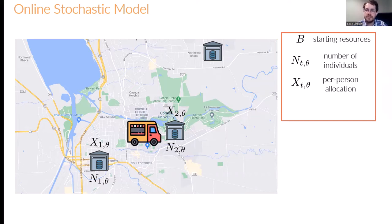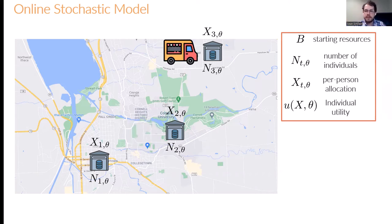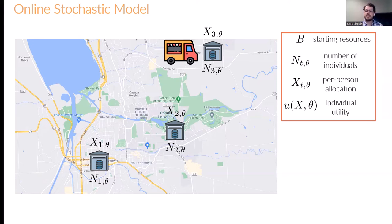The mobile food pantry then goes to the second distribution location, observes the vector N2 theta of the number of individuals of the different types, and decides a per person allocation X2 theta. This repeats to the third round, where you observe N3 theta and decide per person allocations X3 theta. At the end of the day, we measure the allocations based on a utility function U of X theta, which characterizes for each type theta the utility they receive for the allocation given to them.